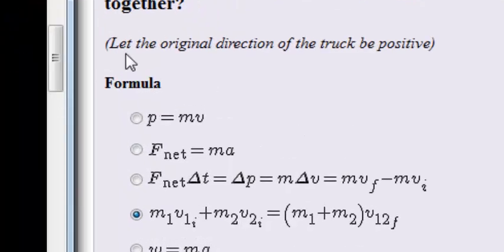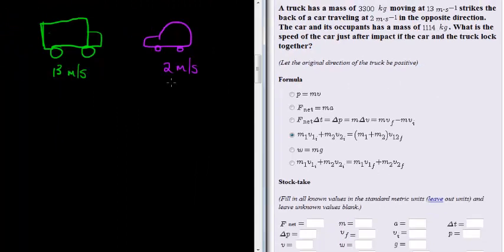But very important to notice is because they're in opposite directions, they can't have the same sign. So one of them has to be negative. Which one? Well, here we read, let the original direction of the truck be positive. So make sure to read your questions very carefully. So that one must be negative since he's in the opposite direction of the truck.